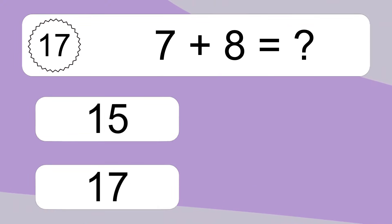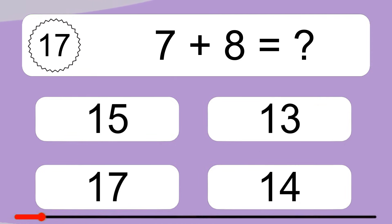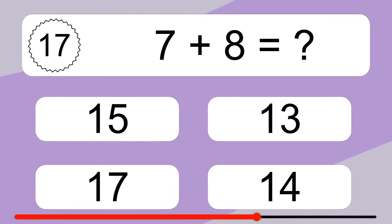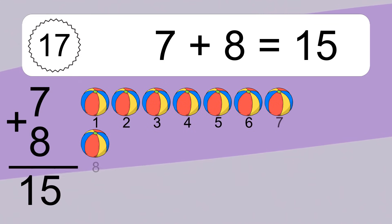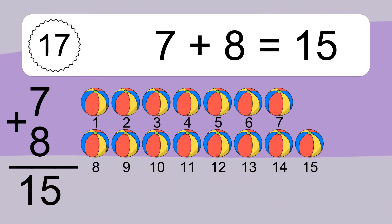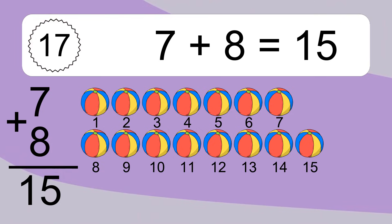Seven plus eight equals what? Seven plus eight equals fifteen. Let's count it: one, two, three, four, five, six, seven, eight, nine, ten, eleven, twelve, thirteen, fourteen, fifteen.